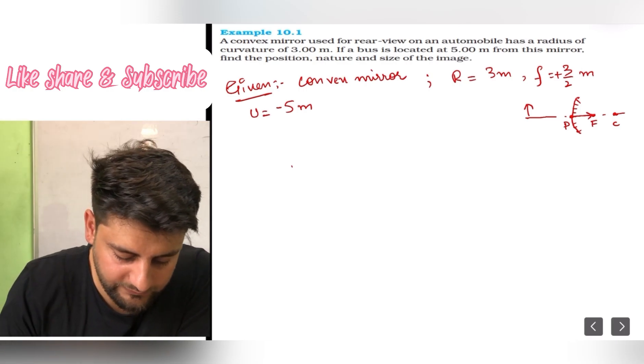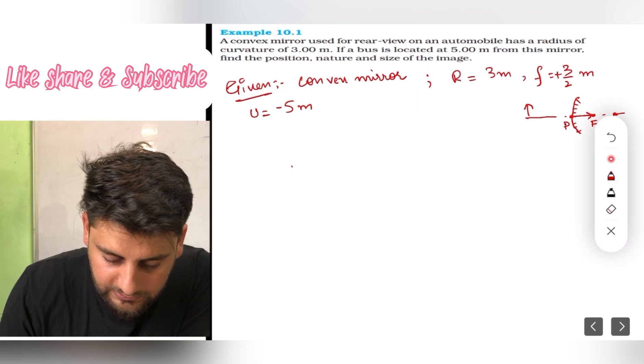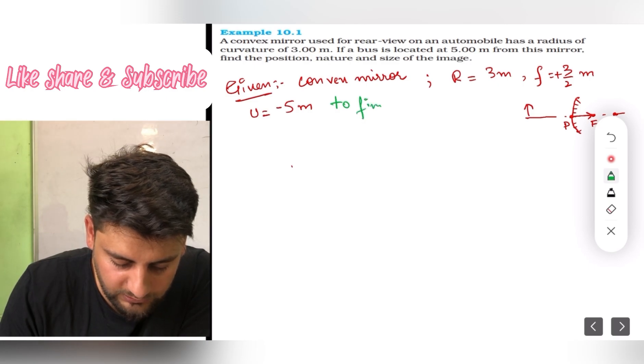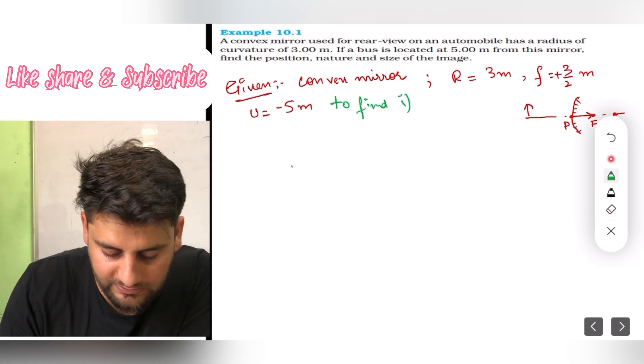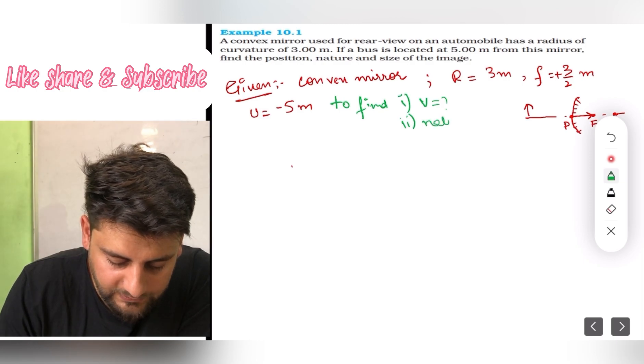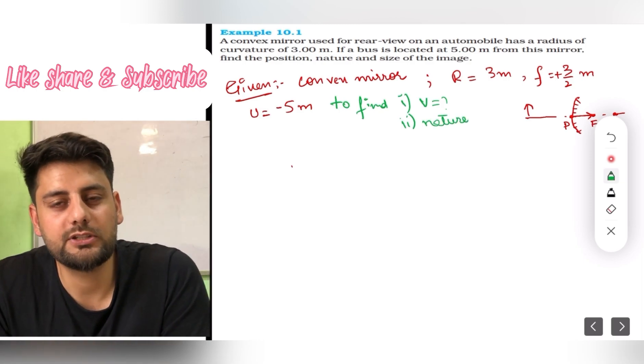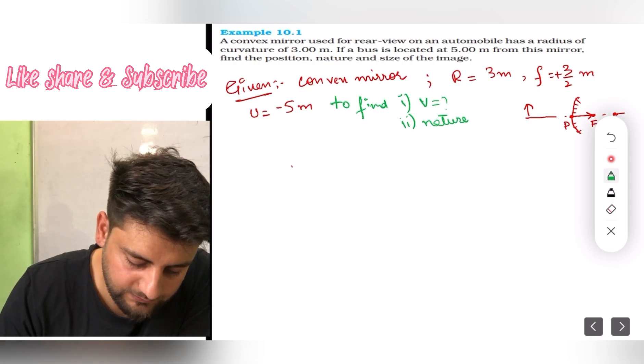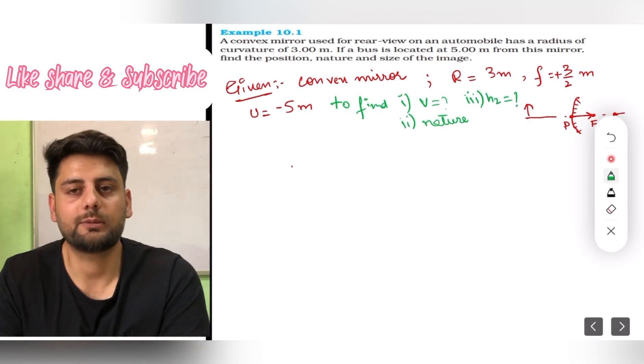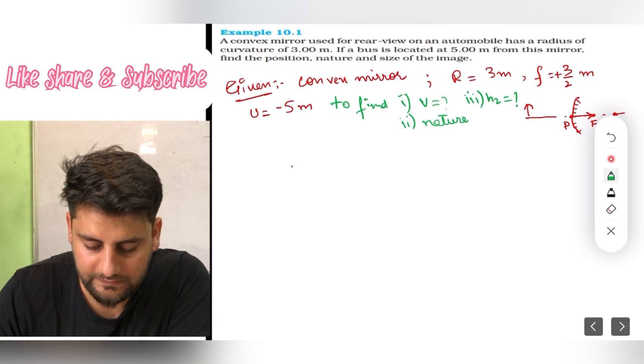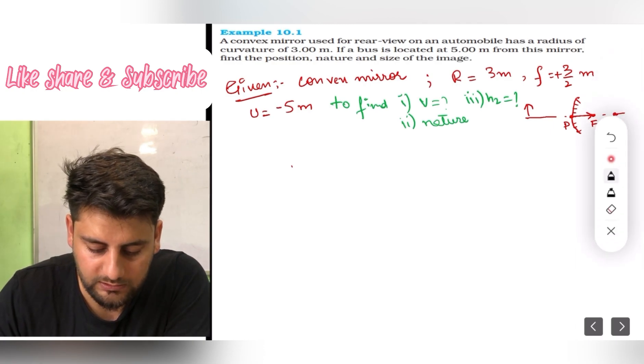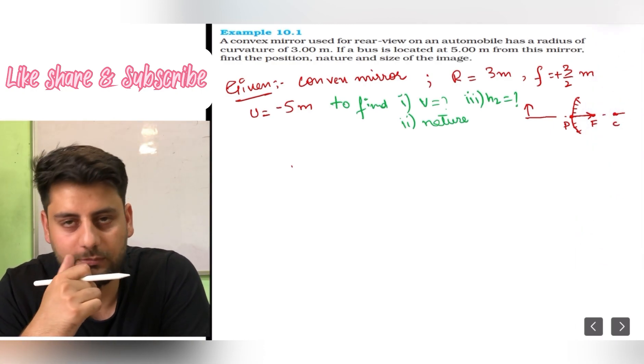Find the position, nature and size of image. So what things have we been asked to find? To find: first thing is position, that is v basically. Second thing is nature, that means is the image real or virtual. And third thing is size, that is h2, the height of image. So let's start. I hope this is clear up to here.